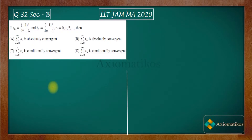Hello dear students, welcome to ExeoMatic course. This video is part of the solution series for IIT JAM 2020. We are here with problem 32 of your paper. This problem is from analysis and it's a section B problem, which means that more than one option can be correct. So now let us have a look.